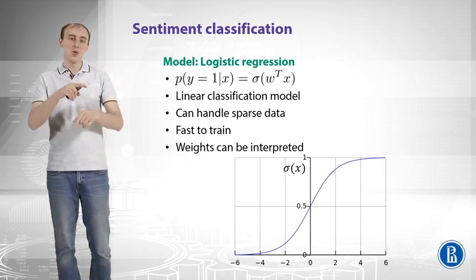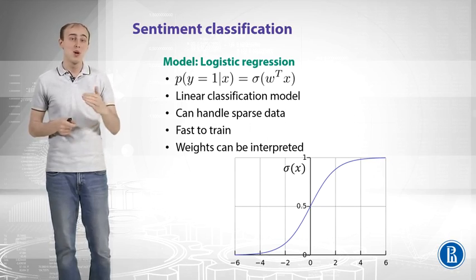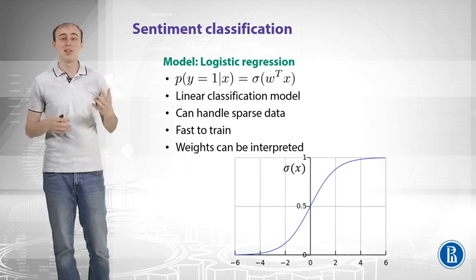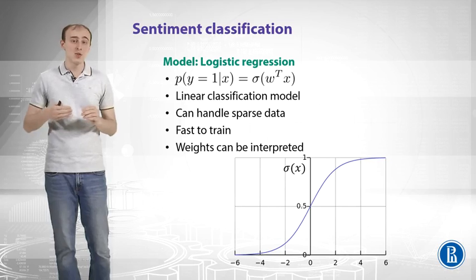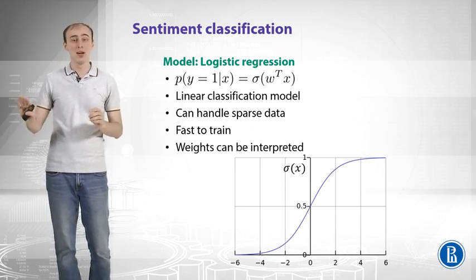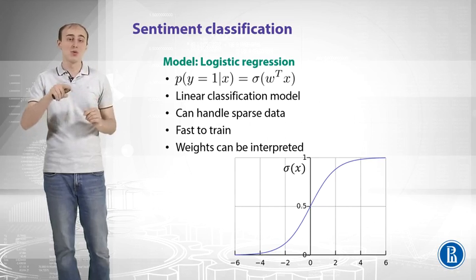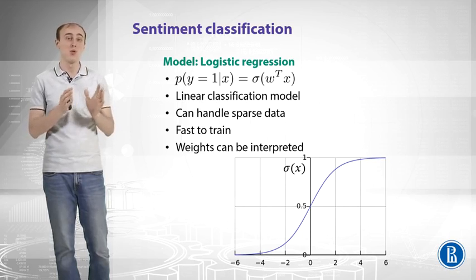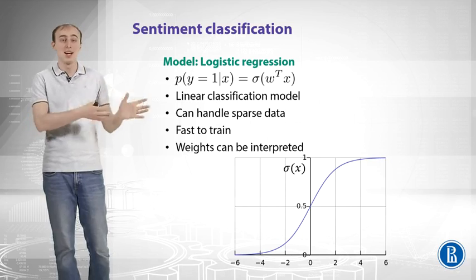Looking at the sigmoid graph: if the linear combination is close to zero, sigmoid outputs 0.5, meaning we don't know whether the review is positive or negative. But as the linear combination becomes more and more positive, the probability of the review being positive grows rapidly. This means that features with positive weights likely correspond to positive words, while features with negative weights correspond to negative words like 'disgusting' or 'awful'.